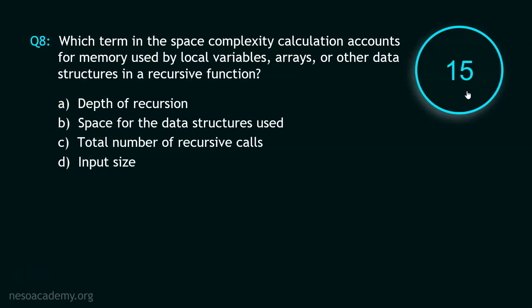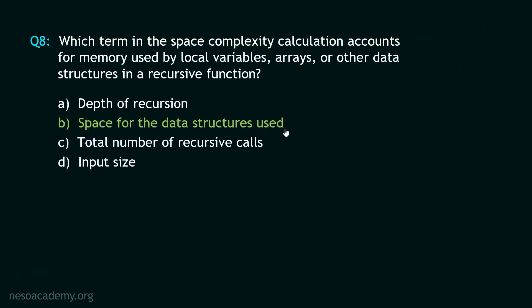And your time starts now. Stop. The correct option is option B: space for the data structures used. We have been asked which term in the space complexity calculation accounts for memory used by local variables, arrays, or other data structures in a recursive function. The space complexity is the sum of the space for data structures used and the depth of recursion. The term accounting for local variables and data structures is the space for data structures used. Now let's move to question number 9.